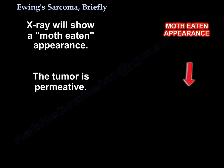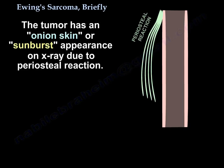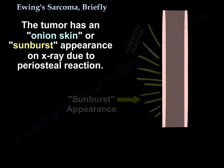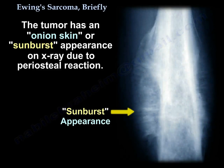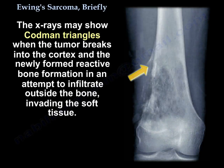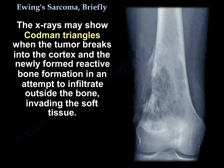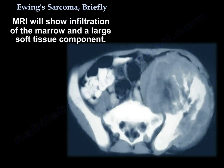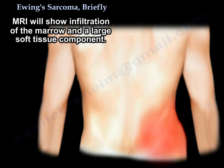The x-ray will show a moth-eating appearance. The tumor is permeative. The tumor has an onion skin appearance or sunburst appearance on an x-ray due to periosteal reaction. The x-rays may show Codman triangles when the tumor breaks into the cortex and the newly formed reactive bone formation, in an attempt to infiltrate outside the bone invading the soft tissue. The MRI will show infiltration of the marrow and large soft tissue component.